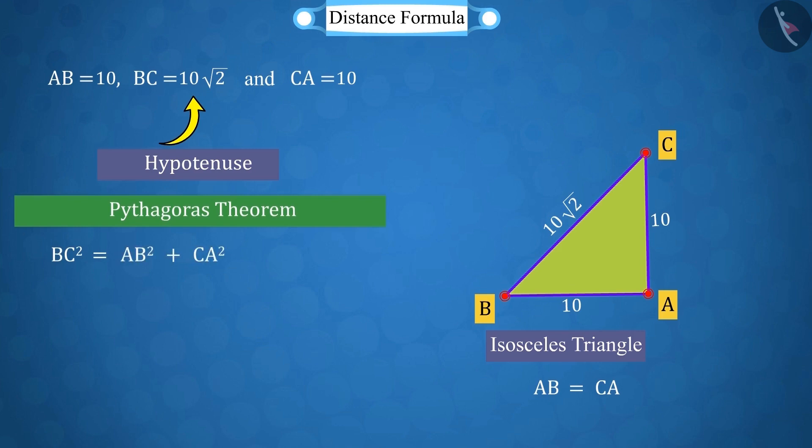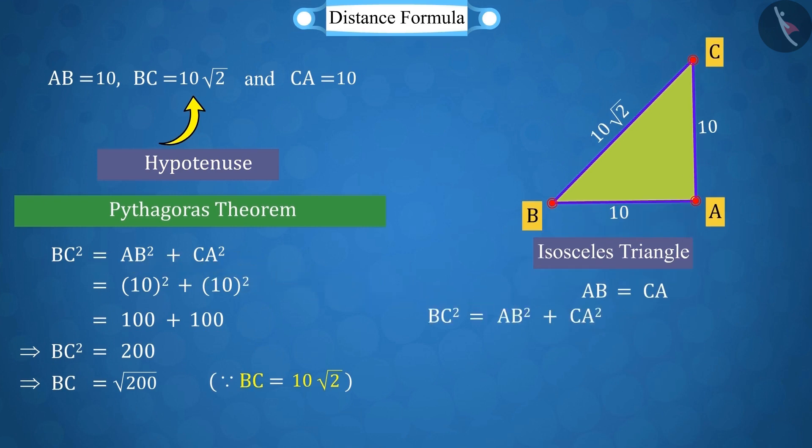Now, by placing the values of these three in the Pythagoras theorem, let's verify if it's a right-angled triangle. If we sum the squares of AB and CA, we get 200, which is equal to the square of BC. So, we can say that it is an isosceles right-angled triangle.